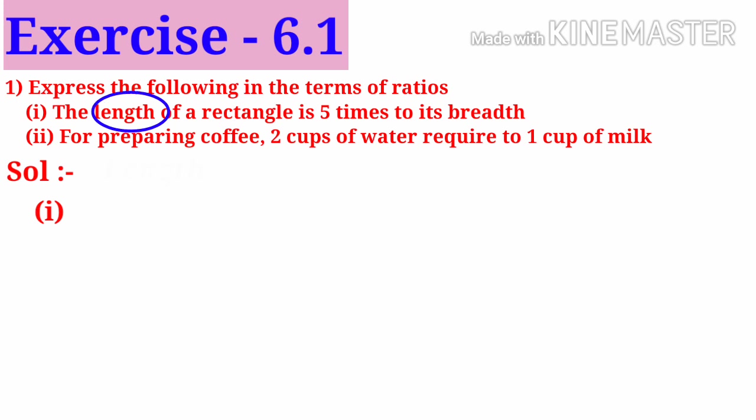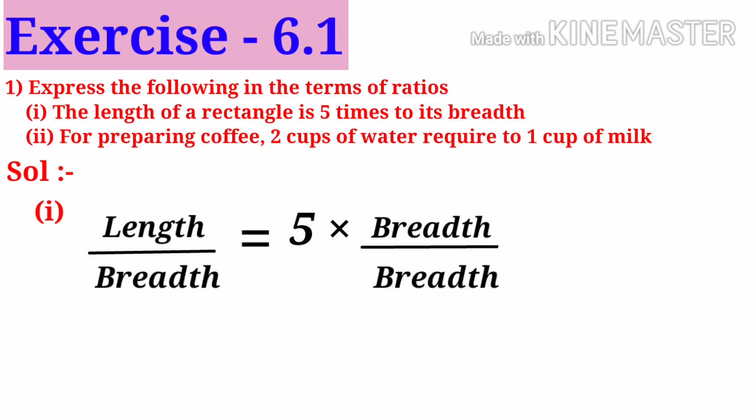Solution number 1. Take the length of a rectangle equals 5 times breadth. Times means multiplication. So length equals 5 into breadth. Now divide both sides by breadth. Breadths get cancelled. That is 5 by 1. So the ratio is 5 is to 1.